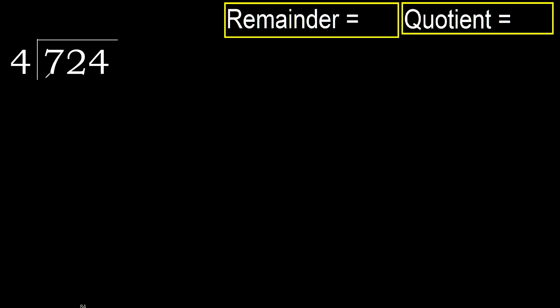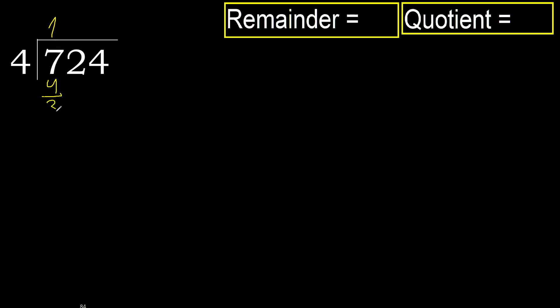724 divided by 4. 7 is not less, therefore work with 7. 4 multiplied by which number is nearest to 7 but not greater? 4 multiplied by 2 is 8 — 8 is greater. Multiply by 1 is 4, which is not greater. Ok, subtract: 7 minus 4 is 3.